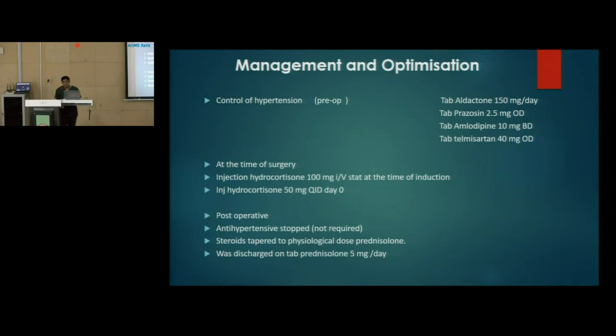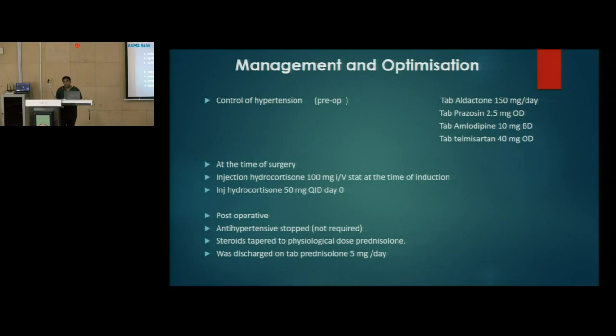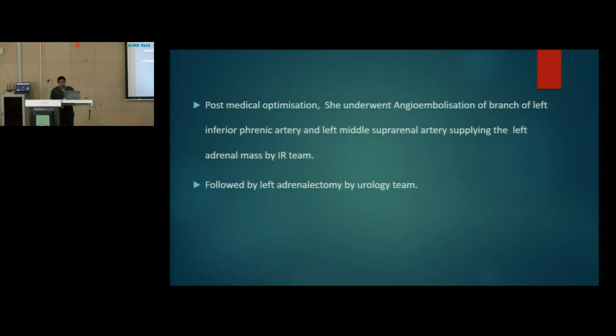The patient was optimized and managed initially by the endocrinology team. Hypertension was controlled with four anti-hypertensives: Tab Repace, Aldactone, Amlodipine, and Telmisartan. Due to chronic suppression of the hypothalamo-pituitary-adrenal axis, at the time of surgery she was given injection hydrocortisone 100 mg IV stat at induction, and in the perioperative period she received injection hydrocortisone 50 mg QID. Post-operatively, anti-hypertensives were stopped and steroids were tapered to a physiological dose of 5 mg per day. She then underwent embolization of the left inferior phrenic artery and left middle suprarenal artery supplying the left adrenal mass by the IR team.